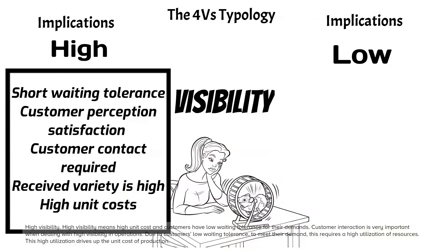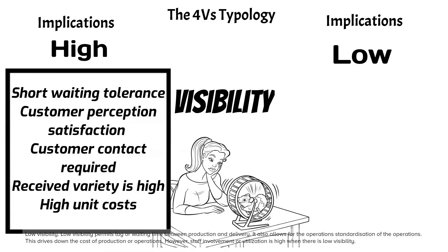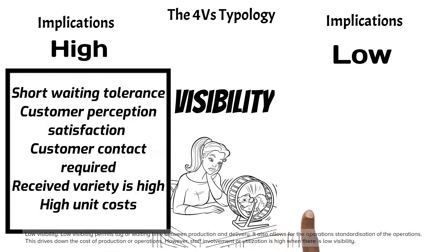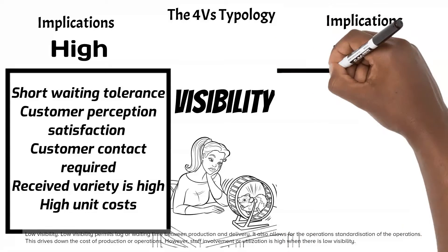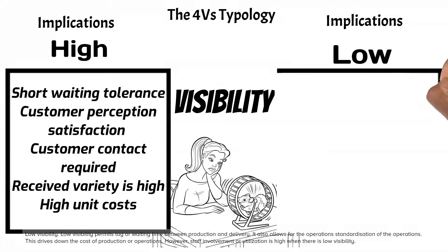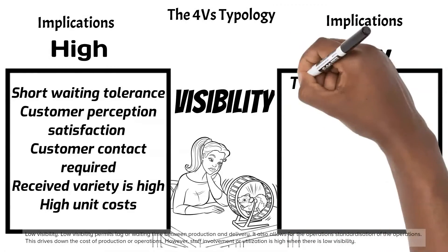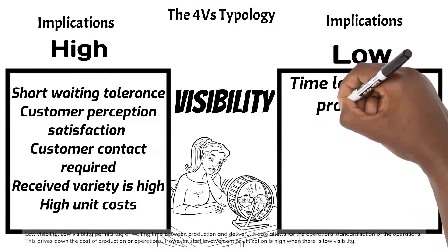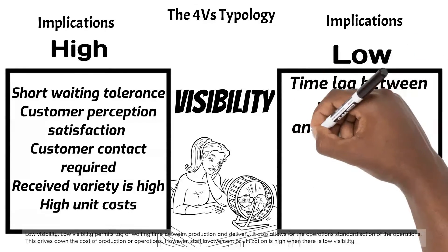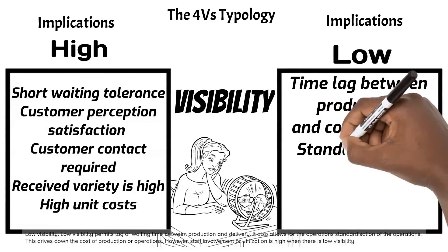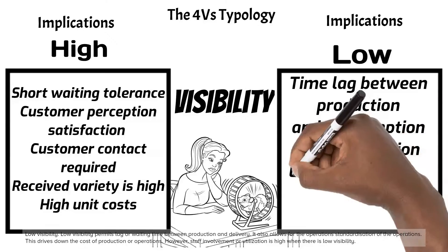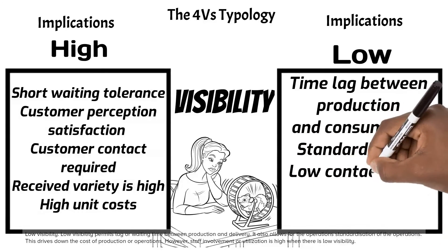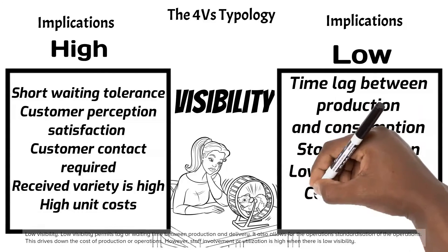Low visibility permits lag or waiting time between production and delivery. It also allows for the standardization of operations, which drives down the cost of production or operations. However, staff involvement or utilization is high when there is low visibility.